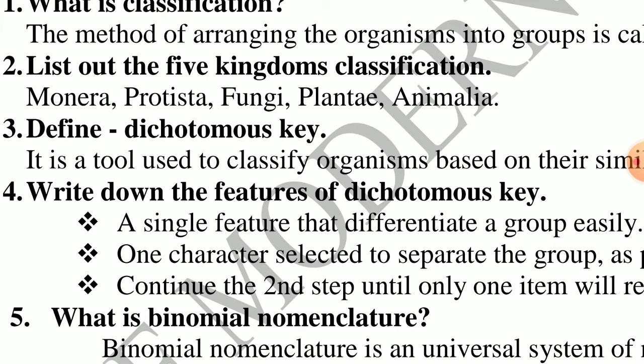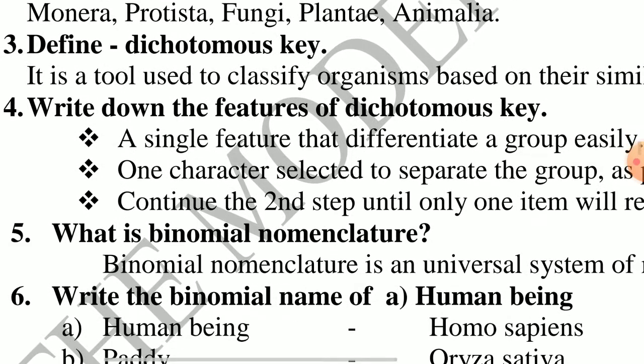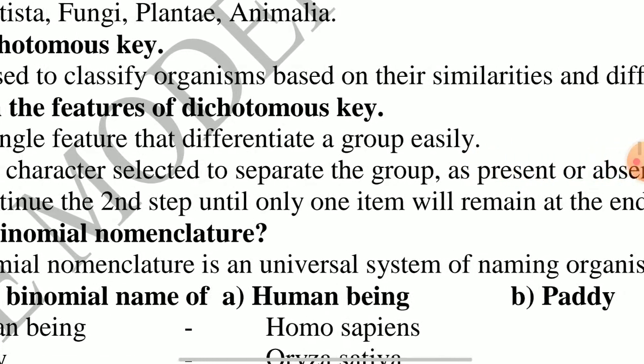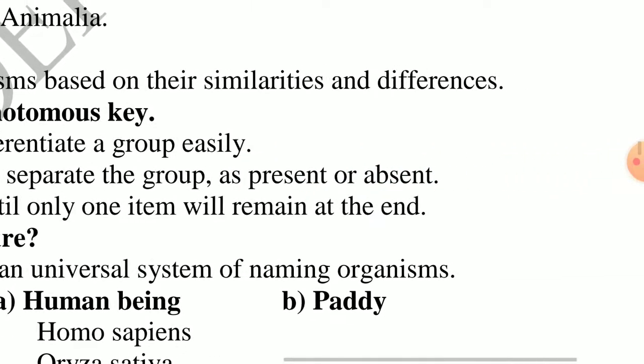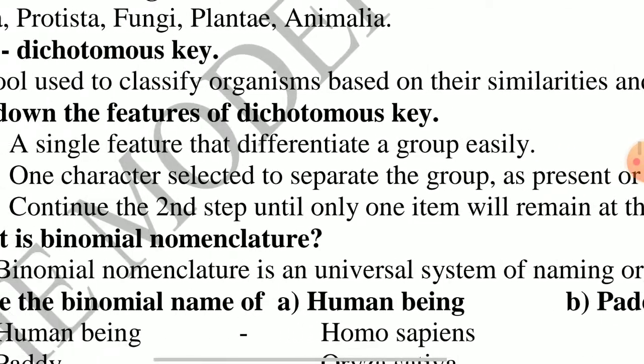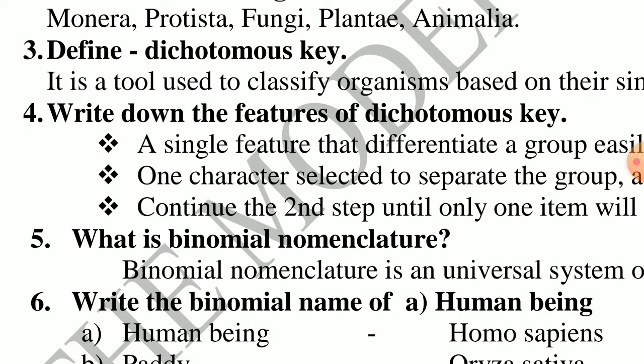Third question: define dichotomous key. Dichotomous key is a tool used to classify organisms based on their similarities and differences.